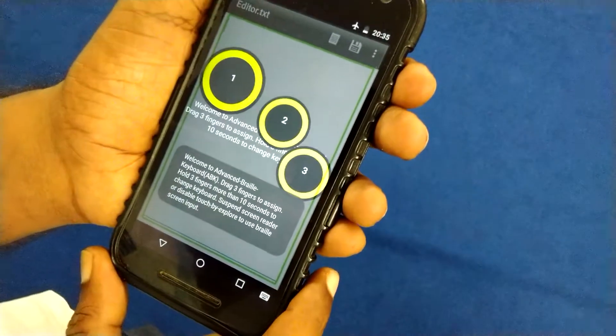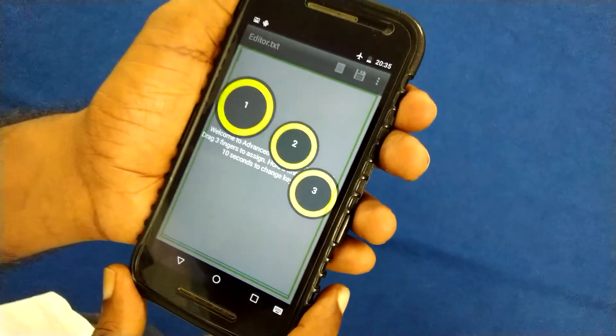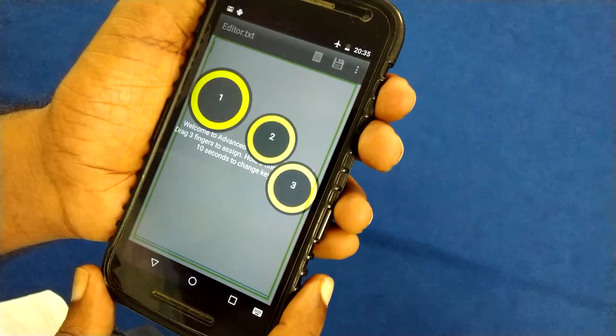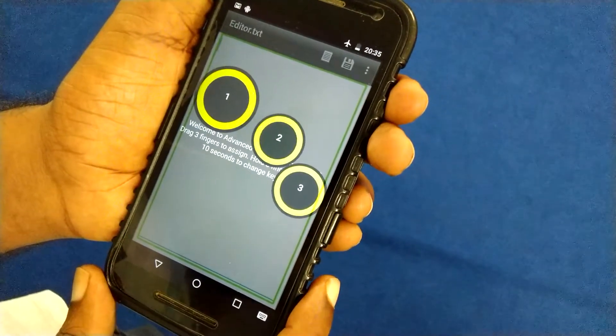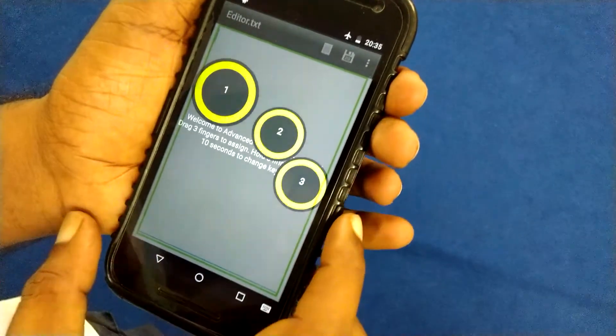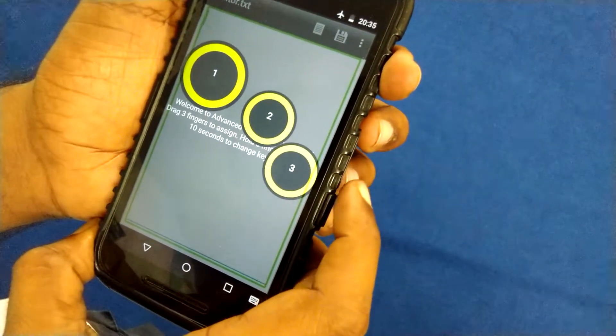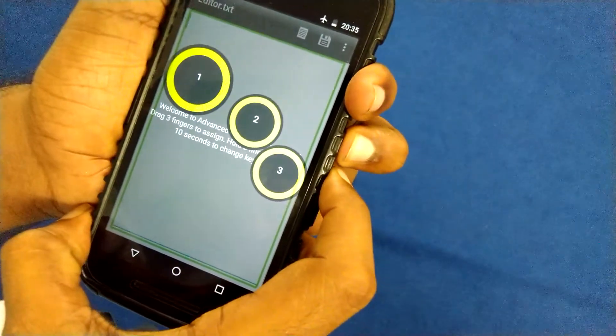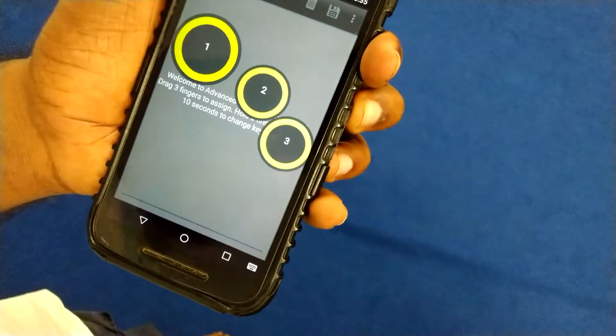Welcome to Advanced Braille Keyboard, ABK. Drag three fingers to assign. Hold three fingers more than 10 seconds to change keyboard. Suspend screen reader. Disabled touch by explore to use braille screen input. Okay, as instructed, I'm going to suspend my TalkBack by pressing and holding volume up and volume down key. TalkBack suspended.